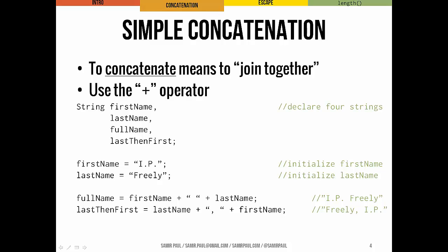One of the things we can do with strings is concatenate them, or join them together. We do that using the plus operator, the plus sign. Here's what that looks like to declare four strings: first name, last name, full name, last and first. First name and last name we initialize.